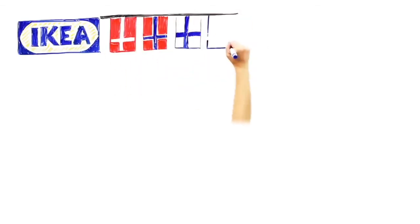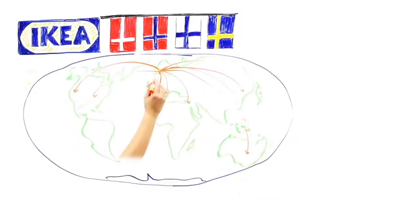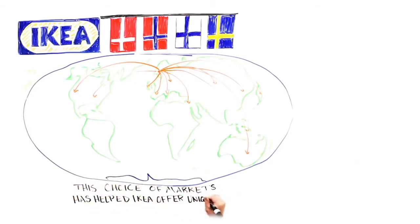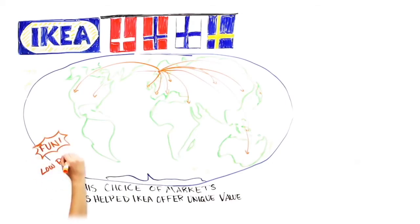So one example of a clearly defined strategy comes from Ikea. Ikea sells relatively inexpensive, contemporary, Scandinavian-style furniture and home furnishings to primarily young, white-collar customers all over the world. By being the first furniture retailer to put stores in every major country, Ikea has greater scale than local competitors. The choice of markets has helped Ikea offer their unique value propositions of inexpensive, fashionable furniture. Ikea sells this furniture in a fun and low-pressure showroom, where order fulfillment is usually immediate.